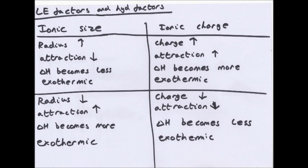Ionic size: as the radius of an ion increases, the attraction between ions decreases and lattice enthalpy becomes less negative — less exothermic, weaker ionic bonding. Small ions can pack closely together and attract each other strongly, while large ions are further apart with weaker attraction. Conversely, if radius decreases, attraction increases and ΔH becomes more exothermic — stronger ionic bonds.